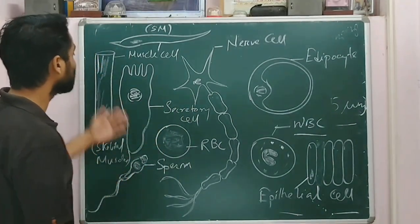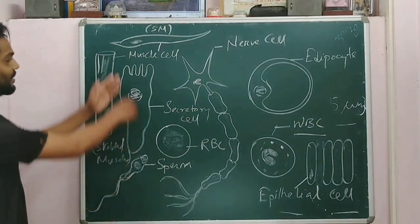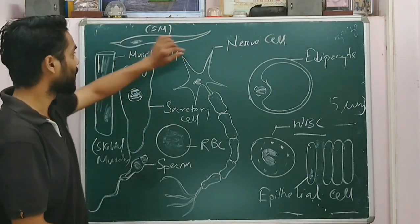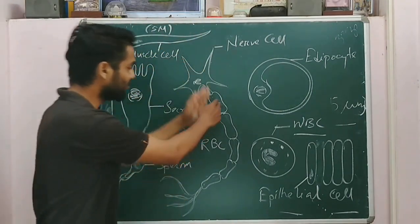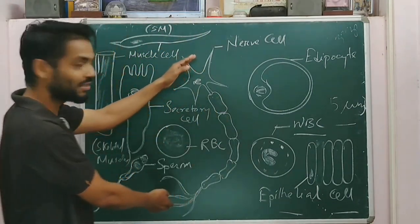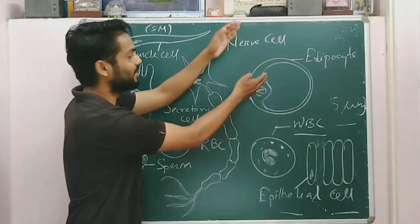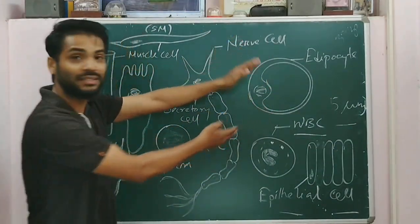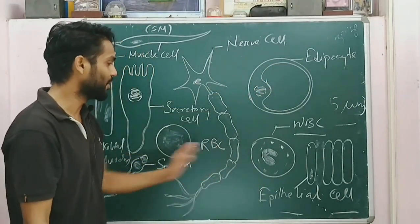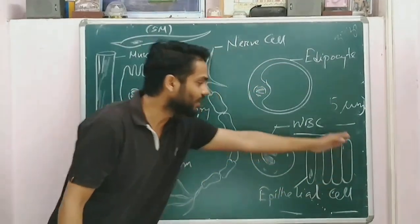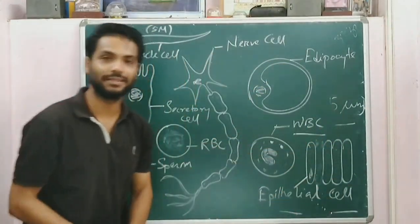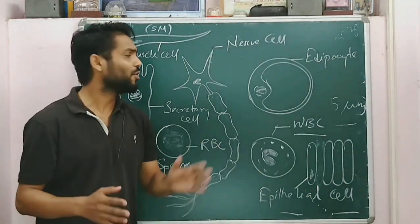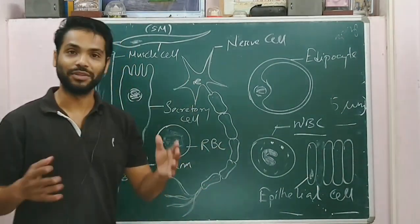We can see here cylindrical cells, secretory cells, smooth muscle cells, and nerve cells. Nerve cells are the longest cells in our body. These are adipocytes — adipose cells — meaning they contain fats. These are blood cells and these are epithelial cells. Now it's time to discuss why these cells have different shapes.